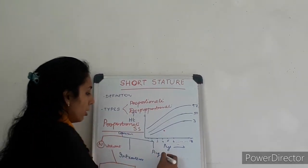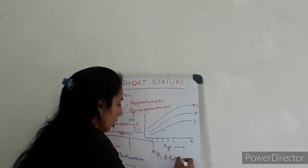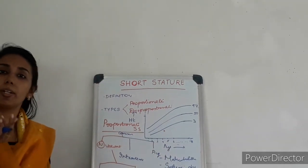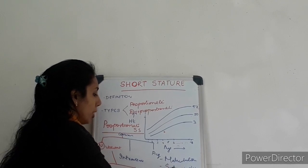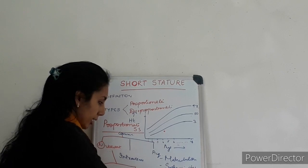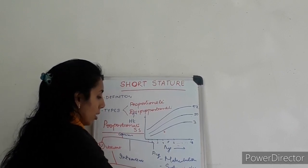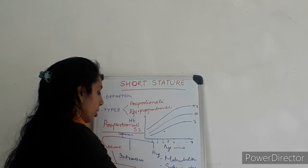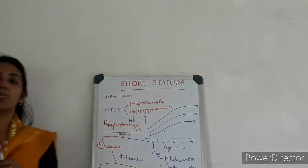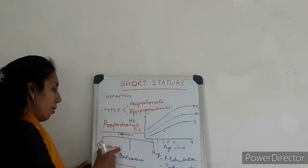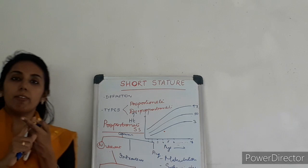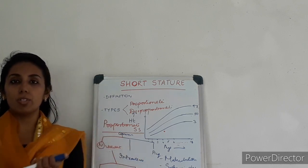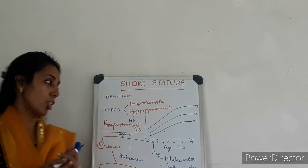What are the acquired causes or postnatal causes of proportionate short stature? The major one has to be malnutrition, then chronic systemic diseases — it can be chronic kidney disease or chronic liver disease. It can be malabsorption, something like celiac disease. It can be endocrine disorders where short stature will result, like growth hormone deficiency or Cushing syndrome. Or it can be psychosocial causes like maternal depression — psychosocial abnormalities will all come under causes of short stature.